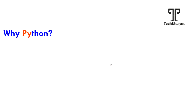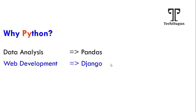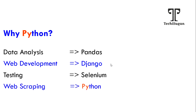Next we will move on to why Python. Python is booming and is being used in various industries. Previously Python was not used as widely, but right now it is implemented in data analysis, web development, testing, web scraping, gaming, data science, and machine learning. For data analysis, frameworks like Pandas are used. For web development, Django is used. For testing, Selenium is used. A specific framework is used for each type of implementation. This is all about why Python.